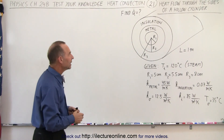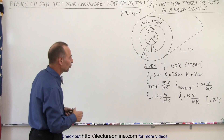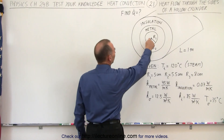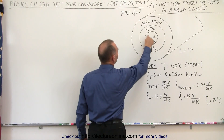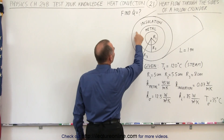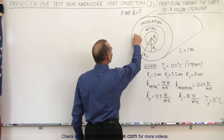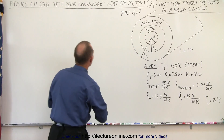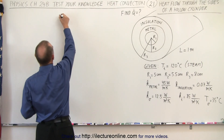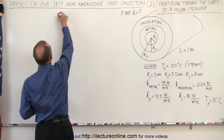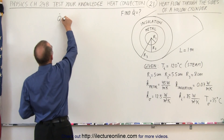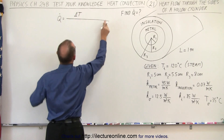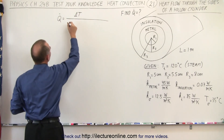So how do we calculate the heat transmission? Well, we have four things we need to consider: the transmission from the inside to the metal, through the metal, through the insulation, and from the insulation to the air outside. So our equation will look something like this — Q-dot is going to be equal to the difference in temperature divided by four terms.